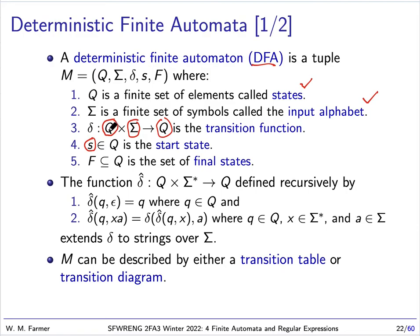The transition function takes us from a state and a symbol to a state, but we can extend that to a state and a string of symbols to a state. This is defined recursively: if we're in state q reading the empty string, we stay in state q. If we're reading a non-empty string ending with symbol a, we process the string x from q, reach an intermediate state, then apply the transition function with a to get the final state. Delta-hat is defined using delta.